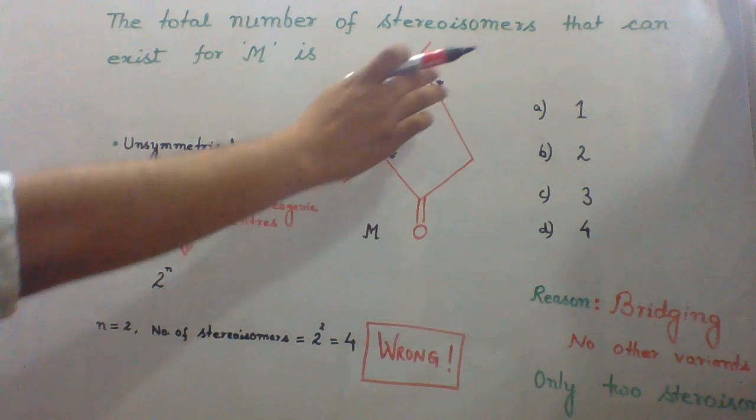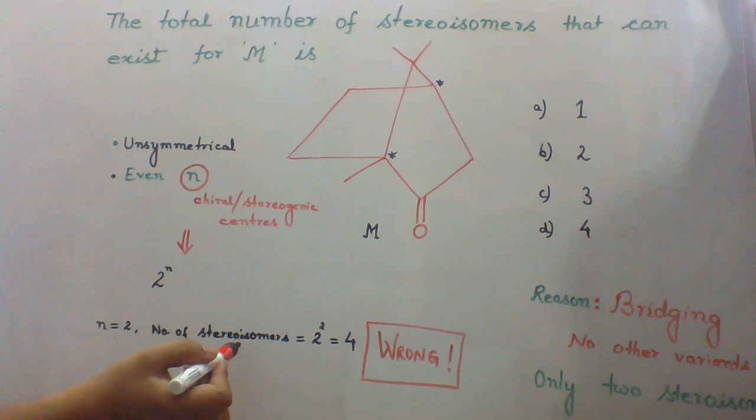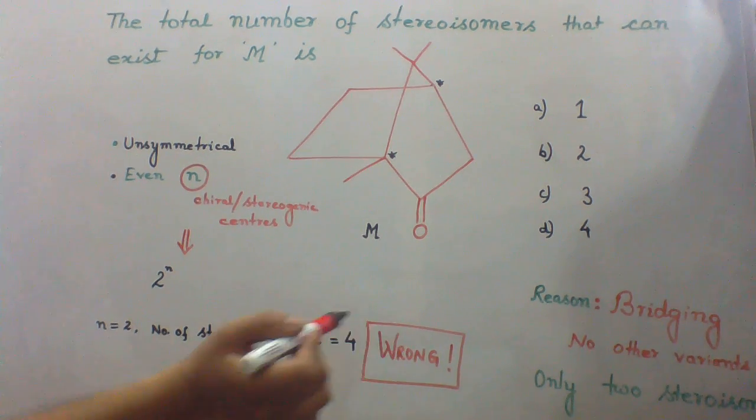M has two chiral centers. So, number of stereoisomers should be 2 raised to the power 2, that is, 4. But this is wrong answer.